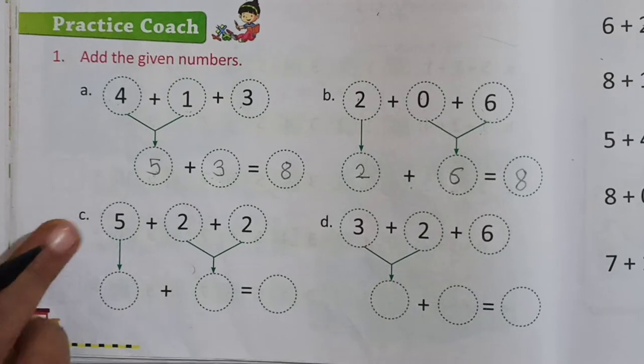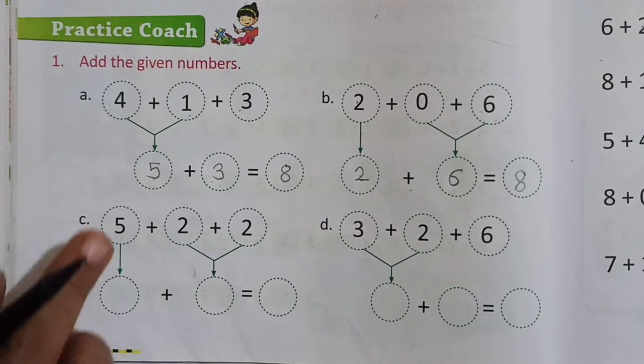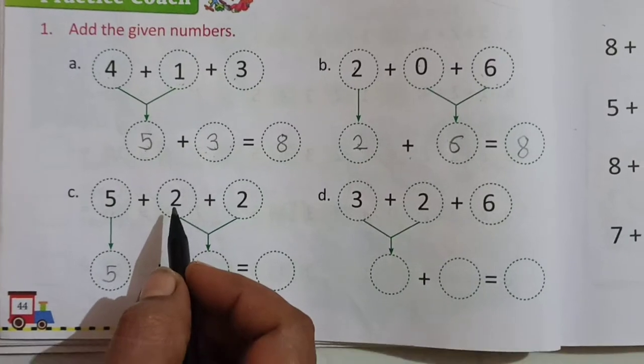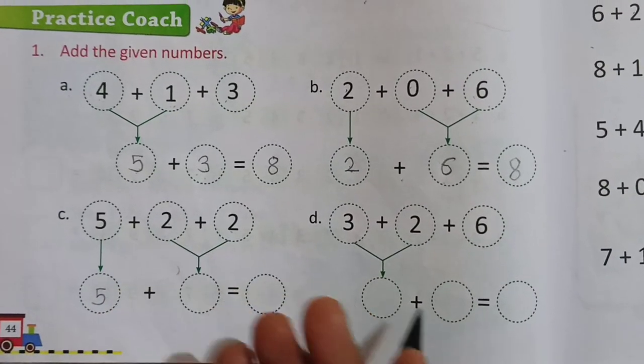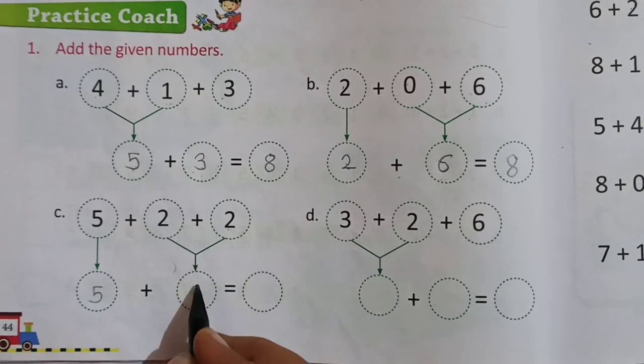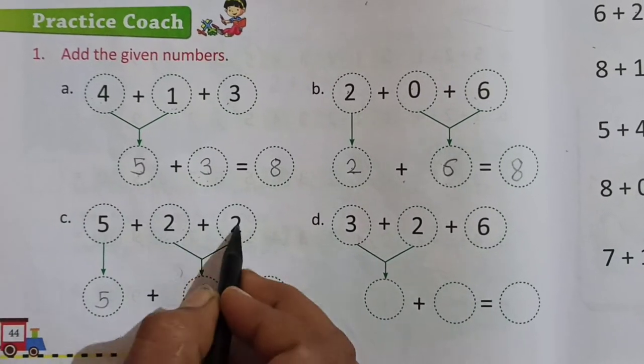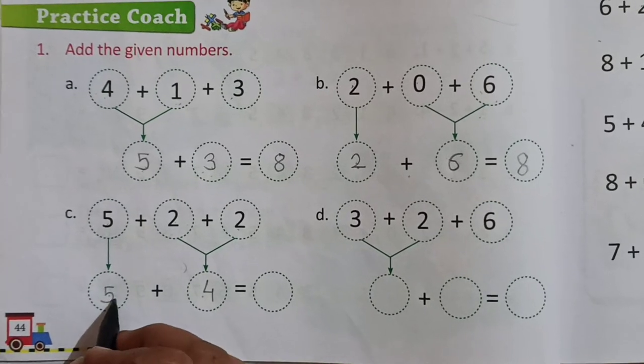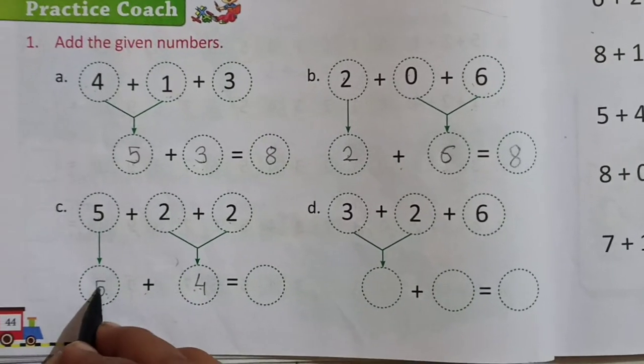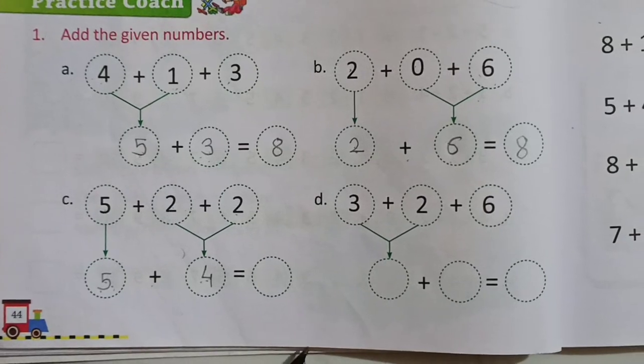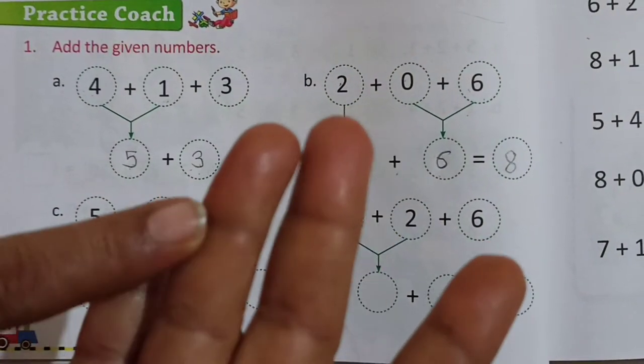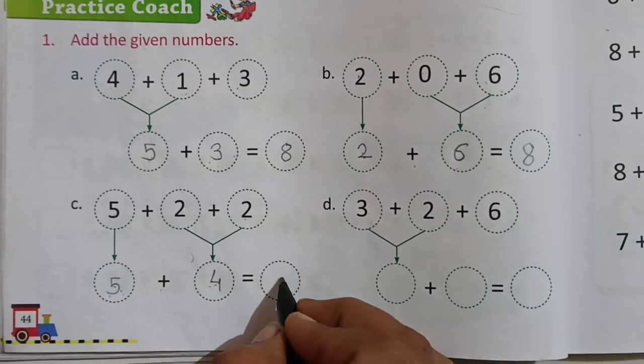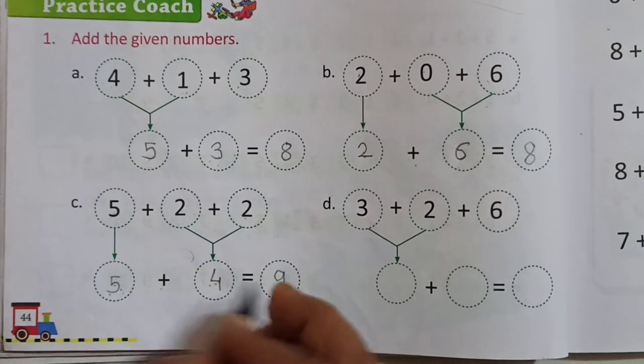Again here. This 5 we have to write as it is. This 2 and this 2. 2 plus 2, 3 and 4. So here 2 plus 2 is equal to 4. This 5 as it is. And 5 plus 4, we have to go forward to 4 numbers after 5: 6, 7, 8, and 9. So 5 plus 4 is equal to 9.